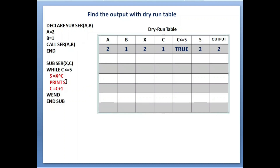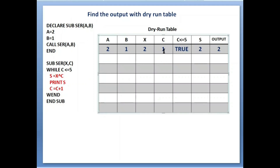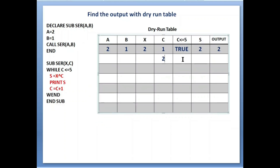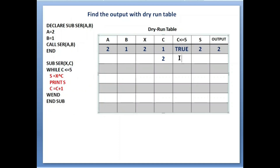After printing, c equals to c plus 1. Value of c was 1, so 1 plus 1 equals 2 — value of c is now 2. 'Wend' means end of while loop, but before it ends it goes back to check the condition. Now c less than or equals to 5: value of c is 2, and 2 less than 5, so condition is again true.